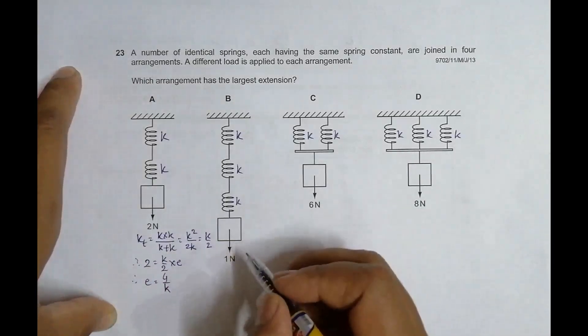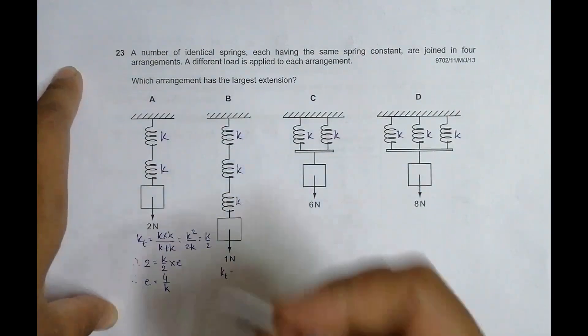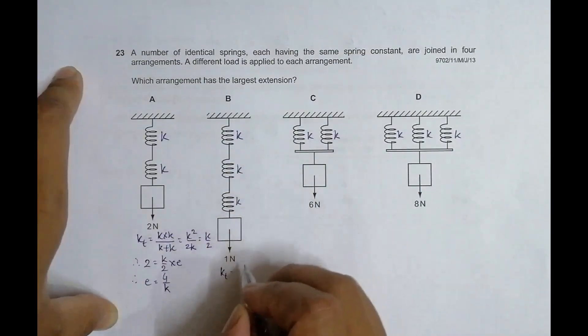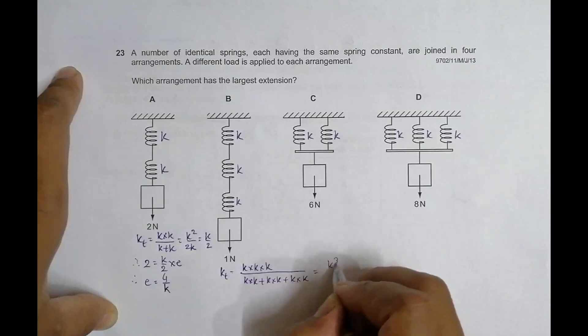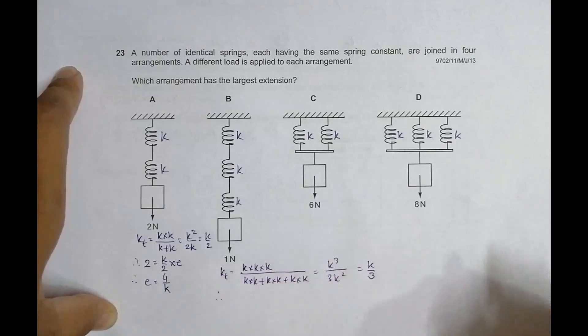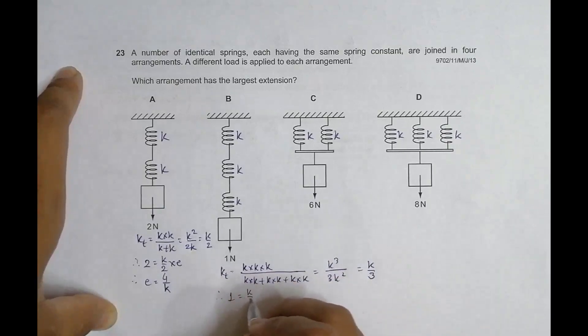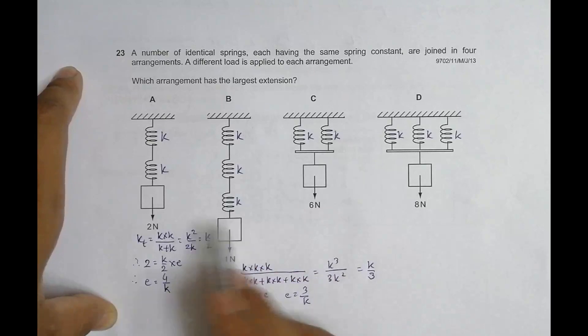For arrangement B with three springs in series, K total equals K times K times K divided by K times K plus K times K plus K times K, which gives us K cubed by 3K squared, which becomes K by 3. When I apply this in the force equation, 1 equals K by 3 into E, and E equals 3 by K. If I compare these two, this is larger.